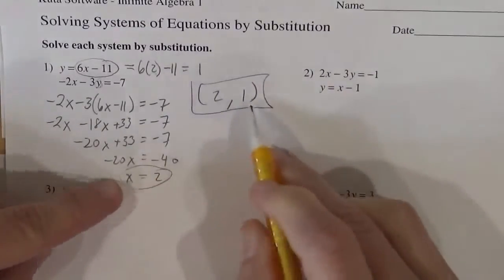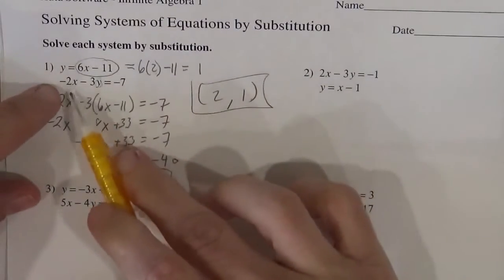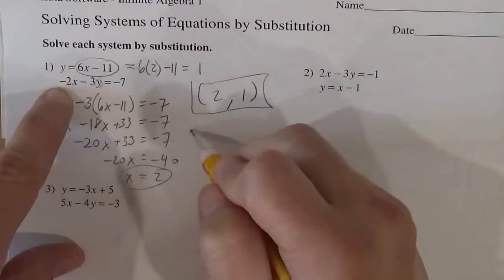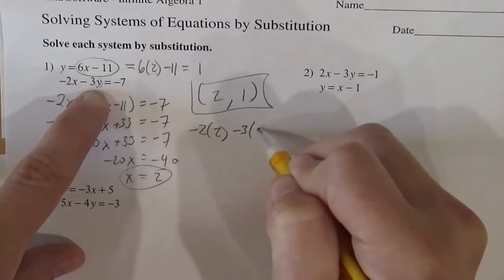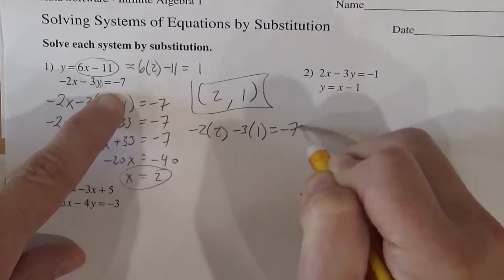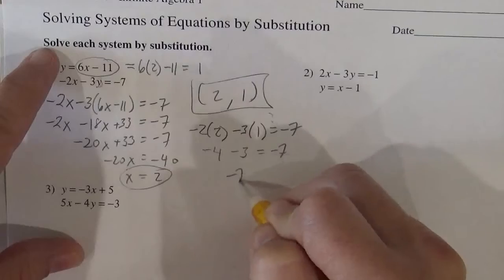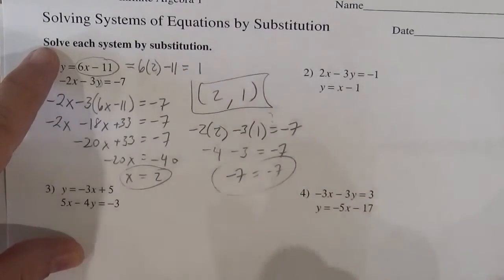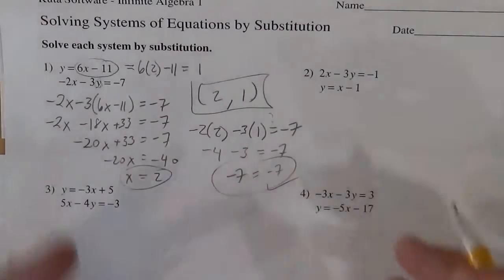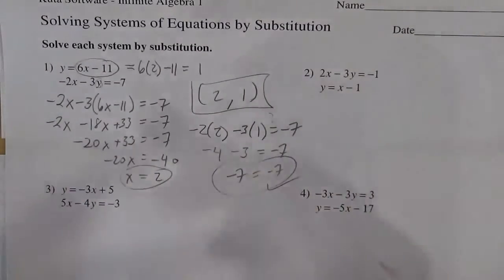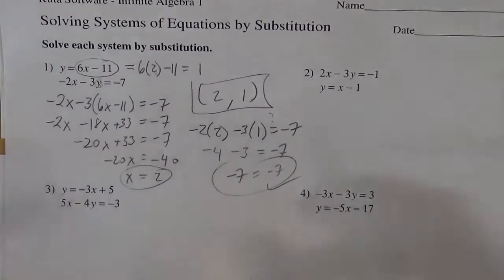And that should be the one point that makes both of those equations true. So I just put it into that one. Let's put it into the other one to make sure it works. So if I do negative 2 times 2 minus 3 times 1 equals negative 7. Does that really work? Negative 4 minus 3 equals negative 7. Negative 7 equals negative 7. Pretty darn impressive, right? So I do encourage you to check your answers.